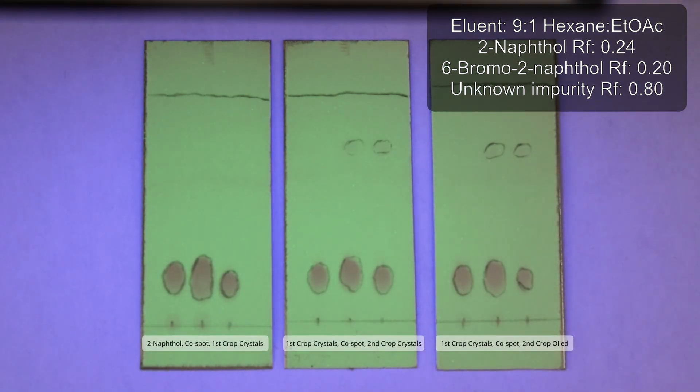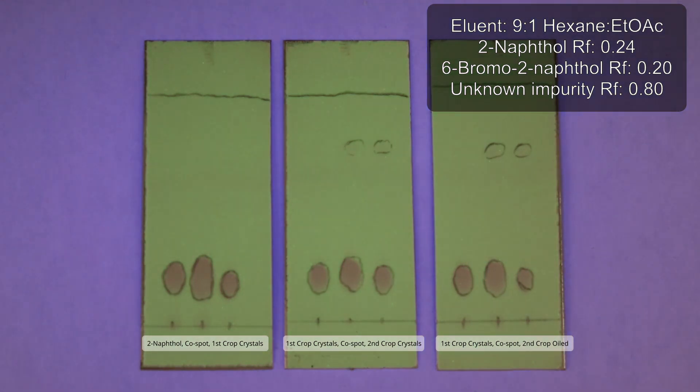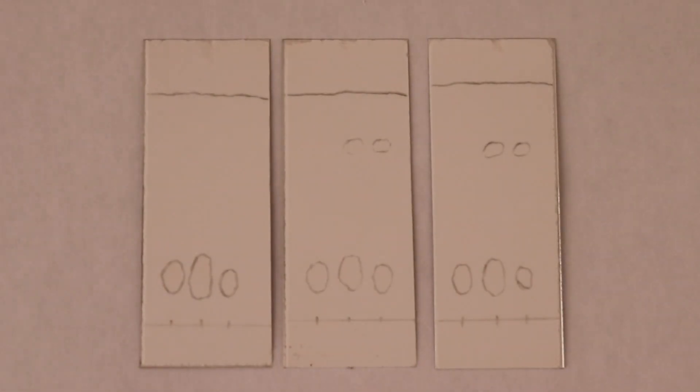The middle plate is with first and second crops of crystallized material, and the rightmost is with the first crop of crystallized material and second crop of oiled material. There's still that high RF spot from both crystallized and oiled material from the second recrystallization, though it's a very faint spot.